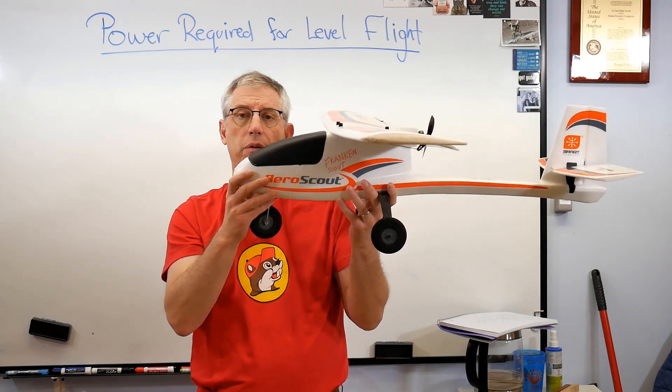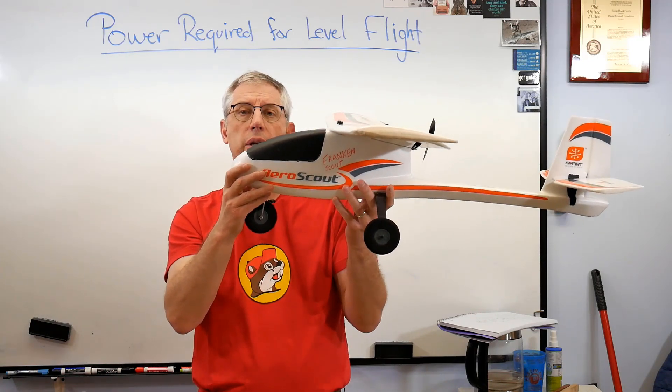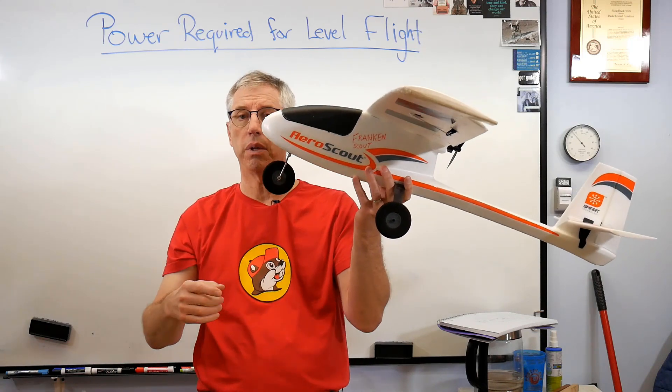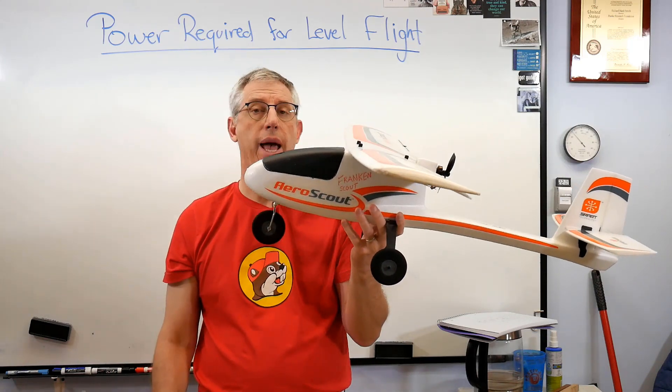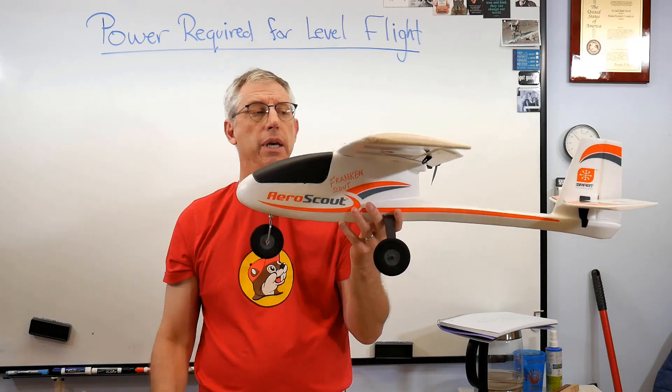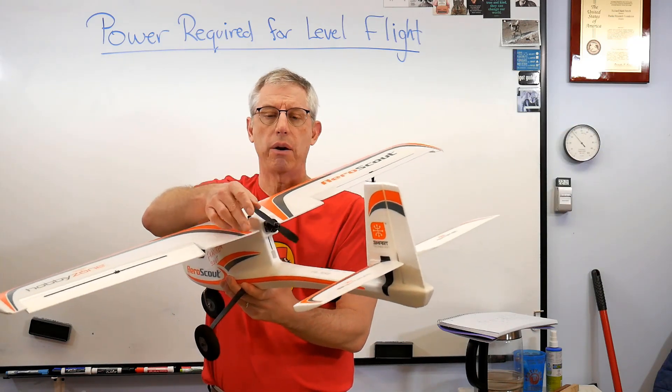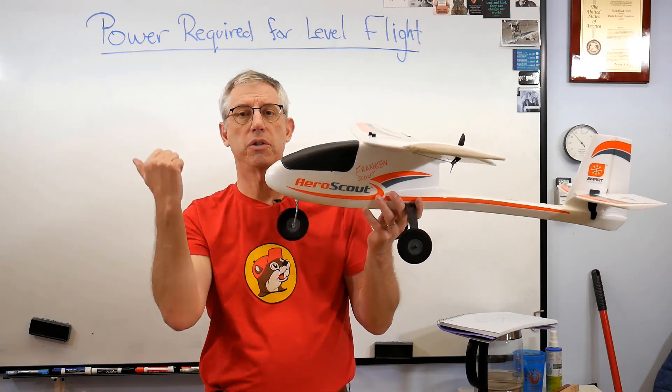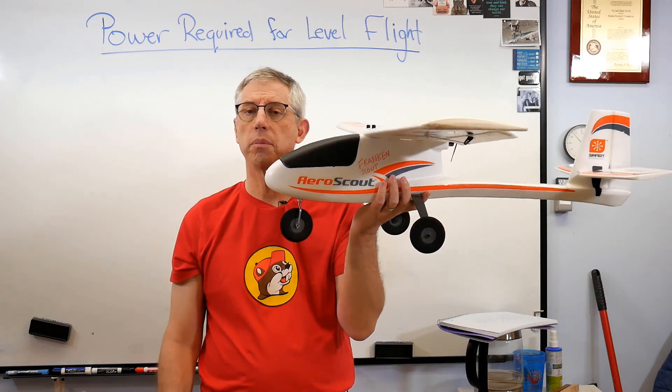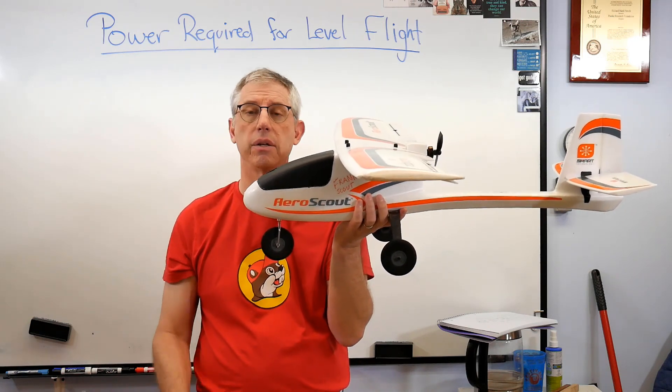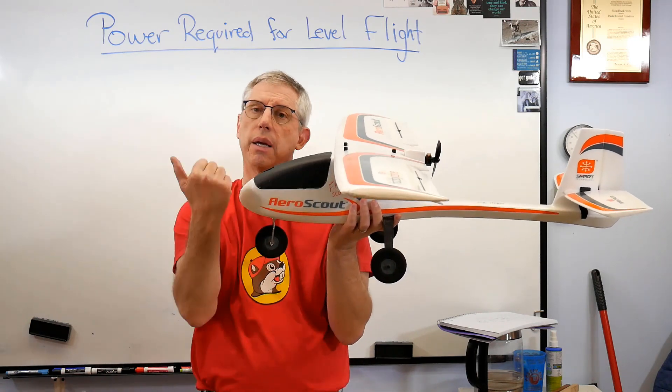Induced drag is drag made by lift, so if the plane's gonna fly the wing must be making lift because of the angle it makes with the air coming in, the angle of attack, and that induced drag gets added to the form drag. So this motor back here, this battery powered motor and propeller has to make a thrust this direction to counteract that drag.